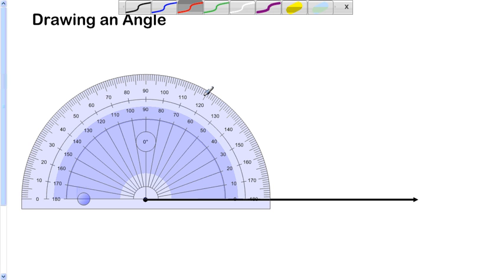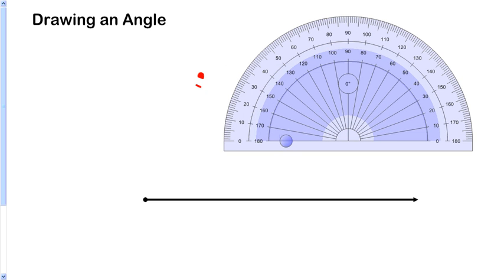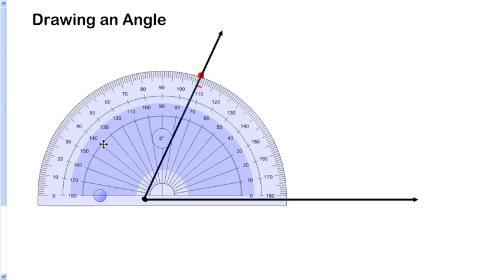Take your pencil, make a dot where you want it to be. Like let's say I want it to be 65 degrees, so 10, 20, 30, 40, 50, 60, not to 70, halfway between, there's 65. Put a dot there or a point as we say in geometry. Then slide the protractor out of the way and draw your other ray through that point.